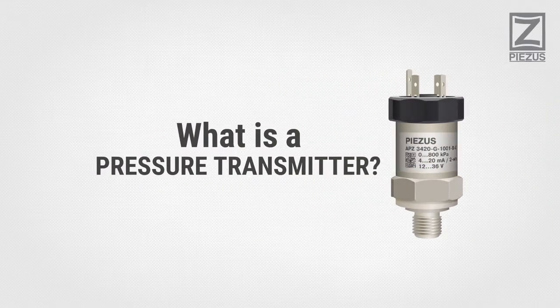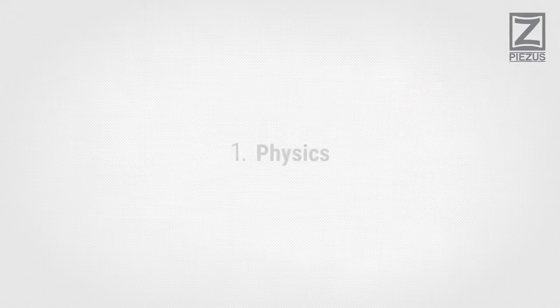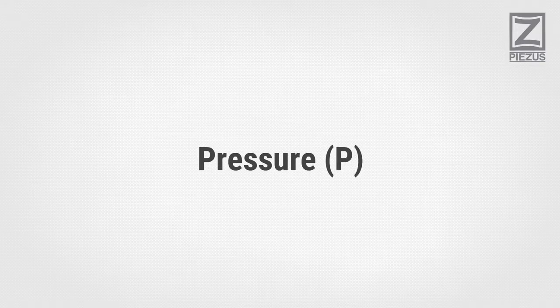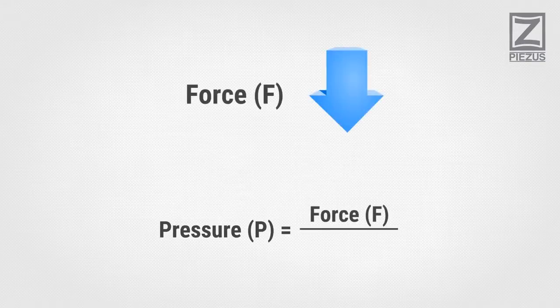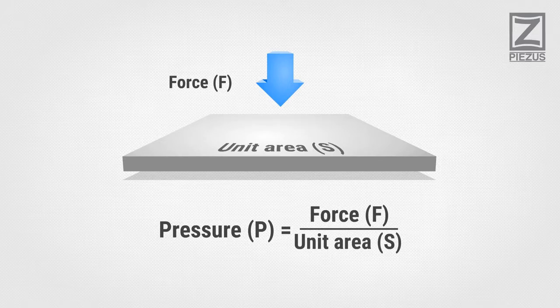What is a pressure transmitter? 1. Physics. Pressure, P, is defined as the amount of force, F, acting per unit area, S.